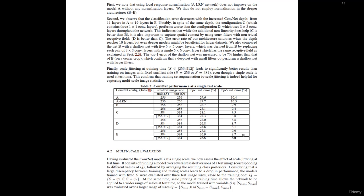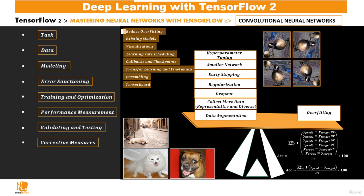More precisely, standard accuracy adds 1 each time the predicted value equals the target value. If for all data points the predictions match targets, we sum 1 a total of m times, and m/m gives 100% accuracy. When the prediction does not match the target, we get 0. This is the top-1 accuracy we're most used to working with.